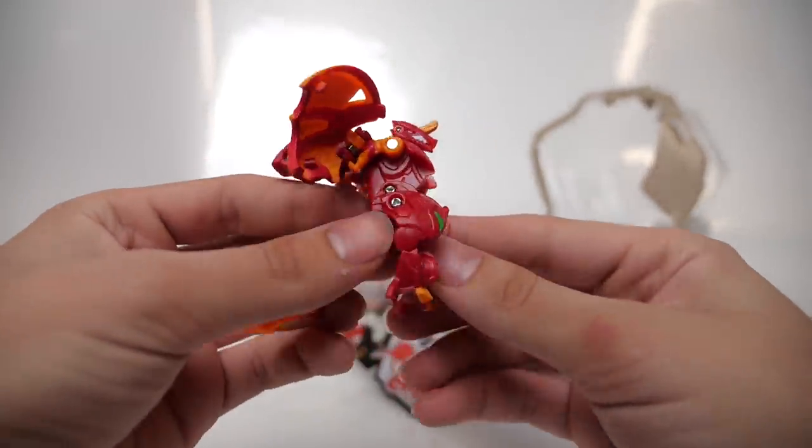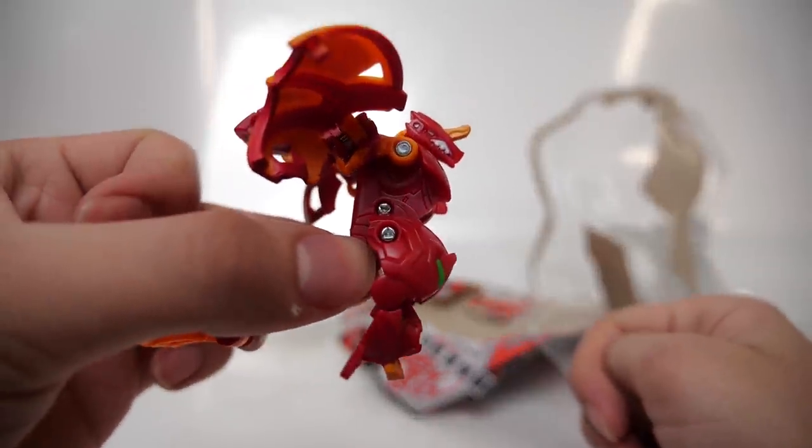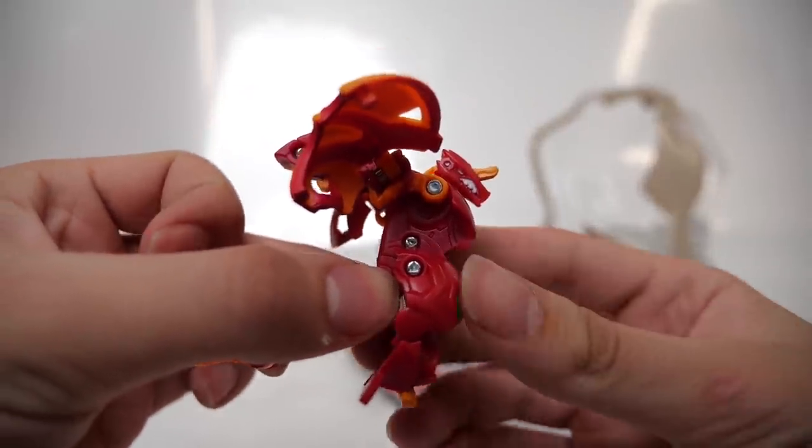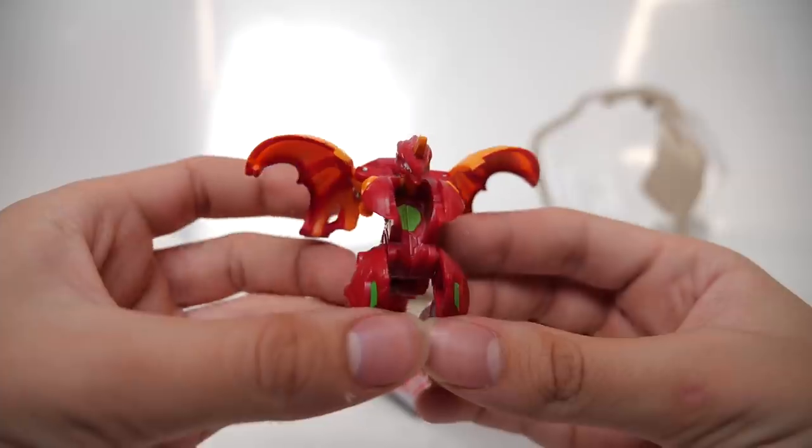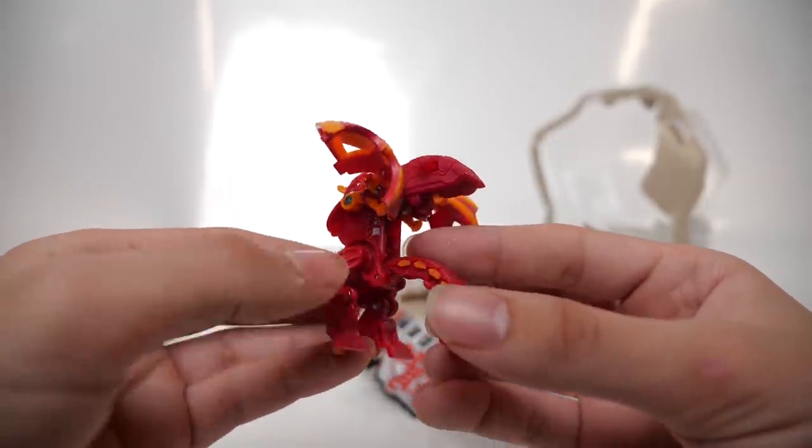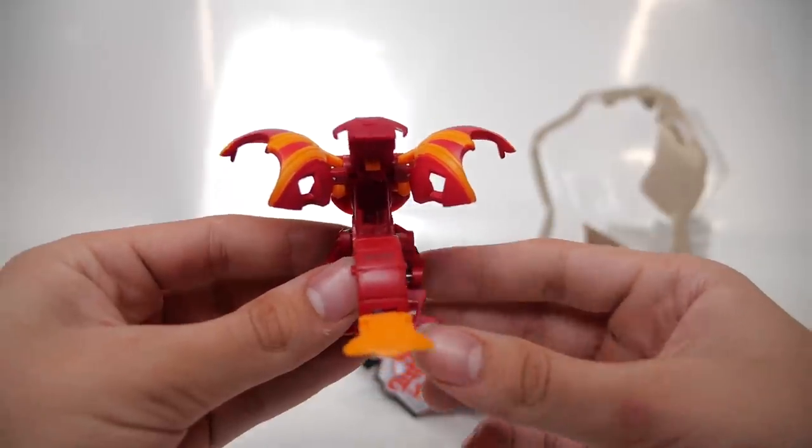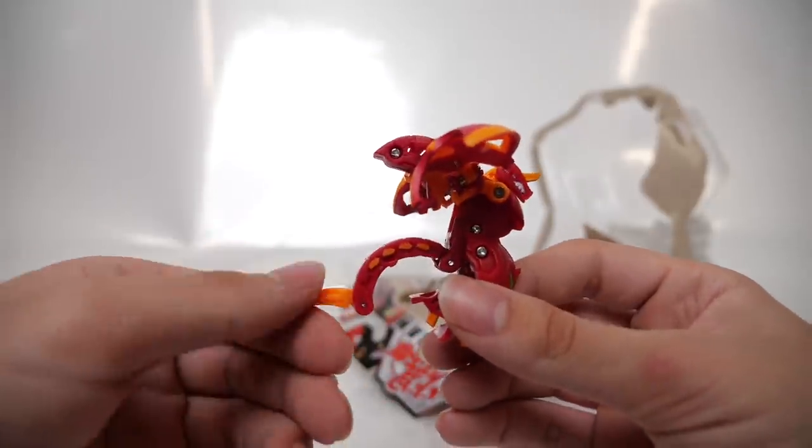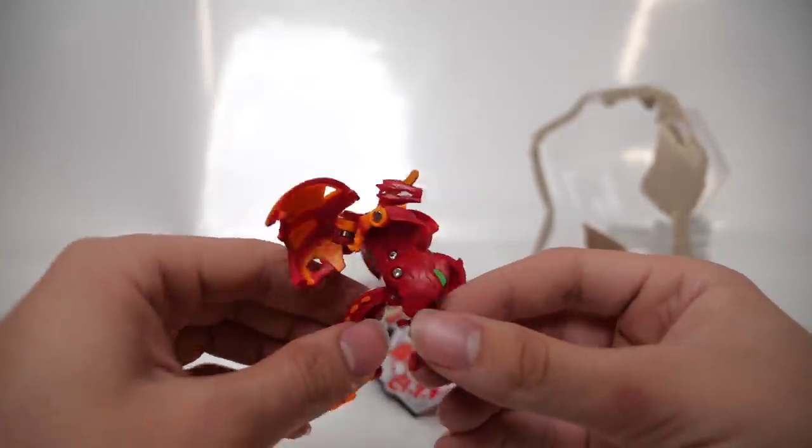So we're taking Dragonoid Ultra out of the blister here, and man, he is looking good. Let's do a quick little 360 here. Wow. He's got so much detail on him. And those green highlights on the knees are really popping to me. This massive tail, perfect for a tail crusher. That's what I'm thinking.